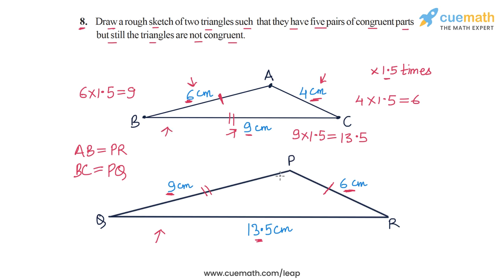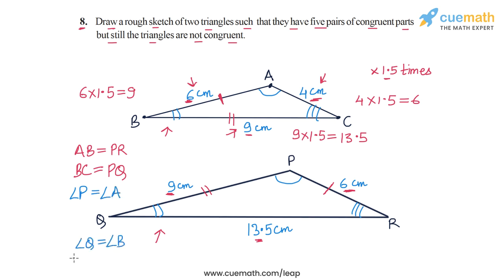This means that angle P equals angle A, angle Q equals angle B, and angle R equals angle C.